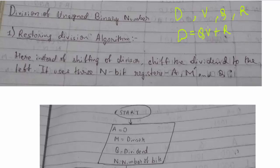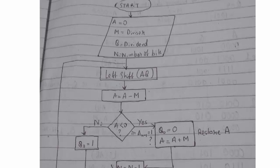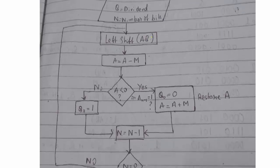Division involves binary subtraction, and that must be clearly understood. In the restoring division algorithm, instead of shifting the divisor, a shift of the dividend to the left is done. It uses three N-bit registers: A, M, and Q. A is the accumulator, M is the divisor, and Q is the dividend. Let us look at the flowchart. We start, and first we perform an arithmetic left shift.